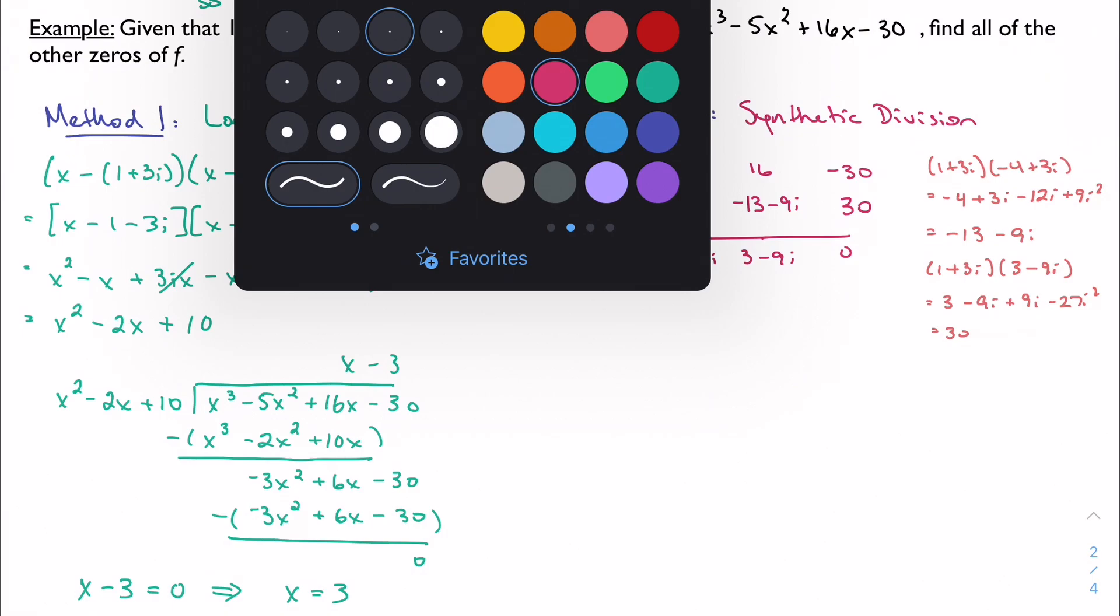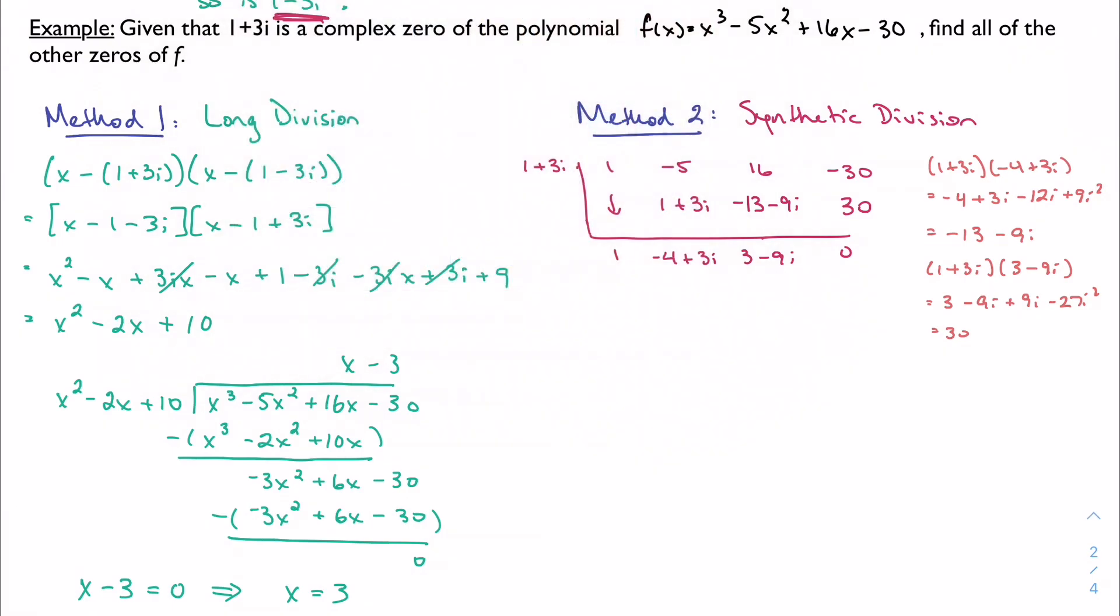Because 1 minus 3i is still also a complex zero. So we need to repeat our work here with my other factor, my conjugate zero. Bring down. Multiply.